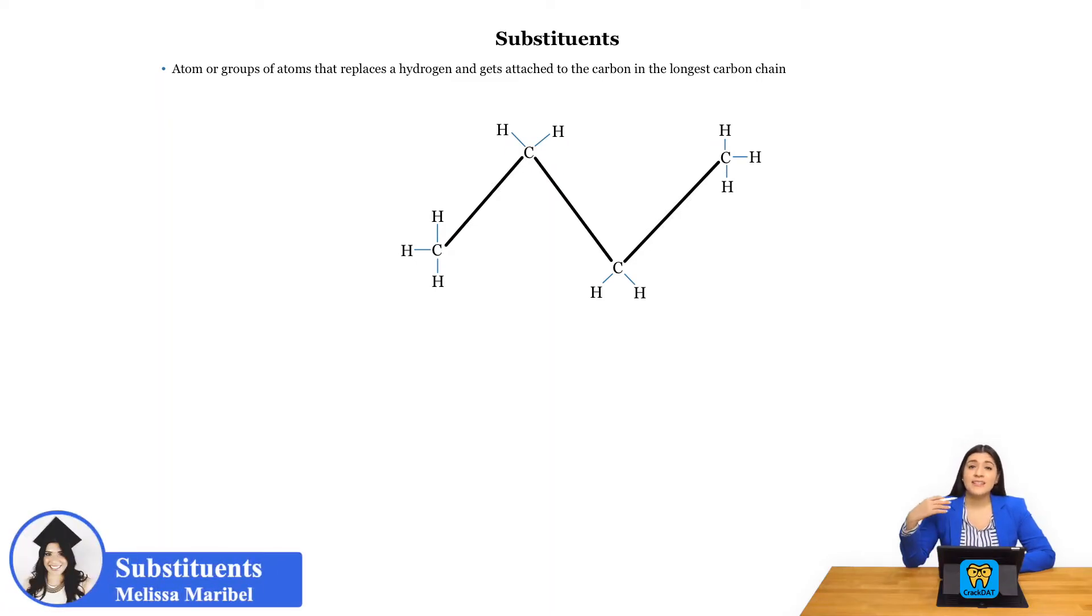Now we're looking at something known as a substituent. So what you would typically see is we'll have some sort of carbon chain, some sort of long carbon chain.